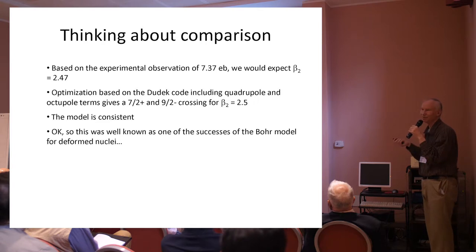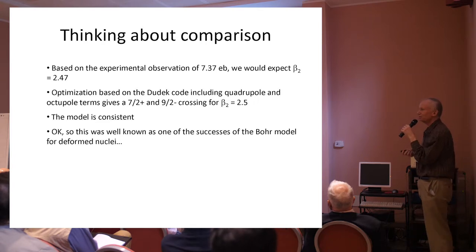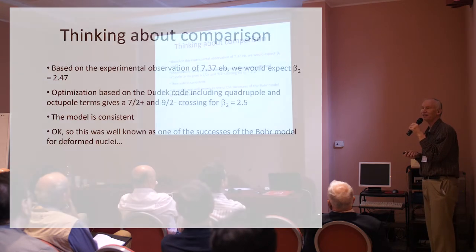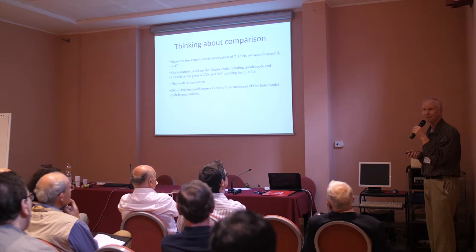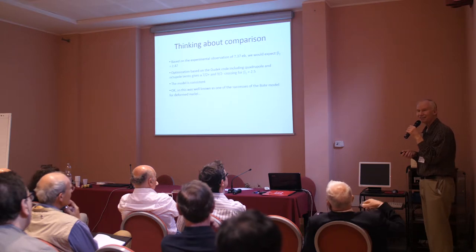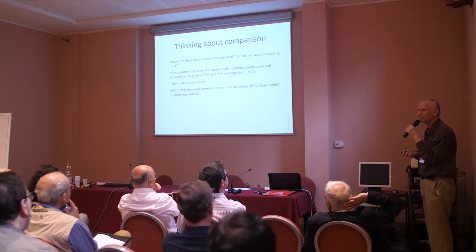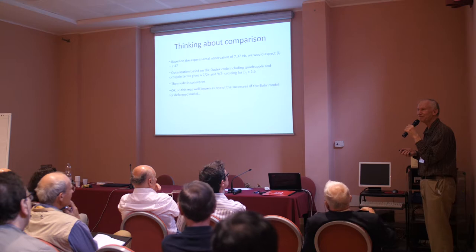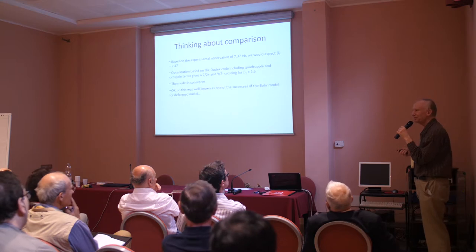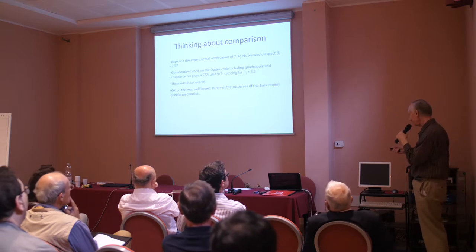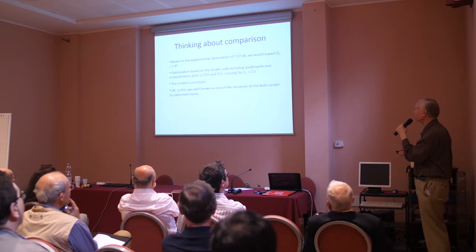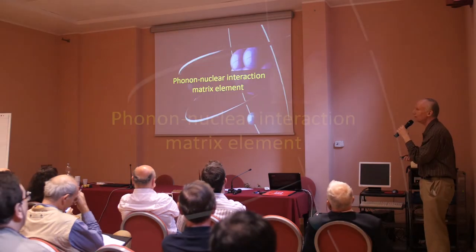That number agrees with the literature. Then I thought, people measure the quadrupole moment — does this deformation parameter have anything to do with the observed quadrupole moment? Looking in the literature, the best value is obtained from a measurement of tantalum, and plugging into the formula for the quadrupole deformation parameter, I get a value of about 0.25. So I get consistency between the level crossing and the quadrupole shape of the nucleus — so I'm happy. People were so ecstatic about this that they gave Nielsen, Aage Bohr, and others a Nobel Prize.